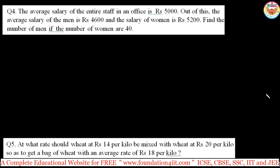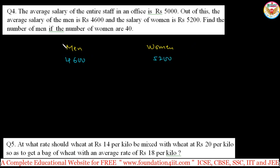Now let's look at allegations, using a shortcut trick method. The average salary of entire staff in an office is 5000. The average salary of men is 4600 and the average salary of women is 5200. Find the number of men if the number of women is 40.